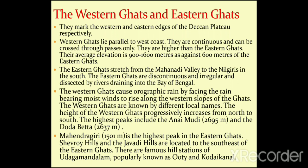The Eastern Ghats stretch from the Mahanadi Valley in the north to the Nilgiris in the south. They are discontinuous and irregular, dissected by rivers draining into the Bay of Bengal. The Western Ghats cause orographic rainfall by forcing the rain-bearing moist winds to rise along the western slopes.